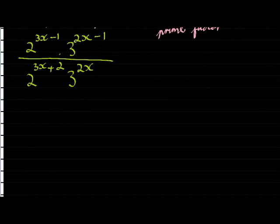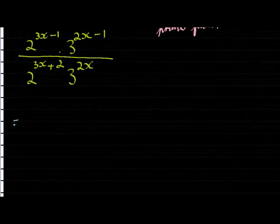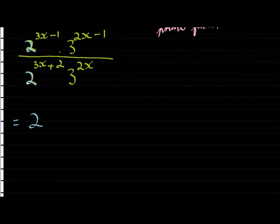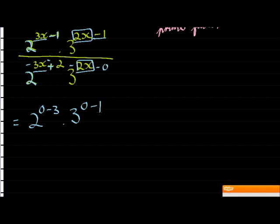And there we go. Now we can use our second law, which says that if I divide bases, I subtract exponents. So let's look at 2. There's my 2 and there's my 2. So I subtract the denominator's exponent from the numerator. So I take 3x minus that 3x gives me 0. Negative 1 minus positive 2 gives me negative 3. Now for 3, I get 2x minus 2x gives me 0, and negative 1 minus 0 is just negative 1.